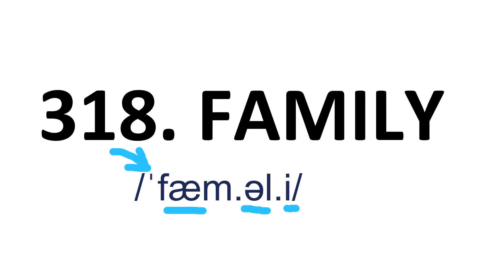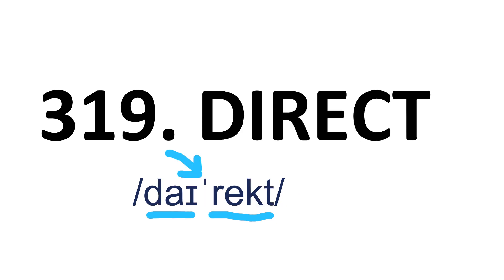Family — it's a three-syllable word and stress is on the first syllable. Family. Direct — it's a two-syllable word and stress is on the second syllable. Direct.